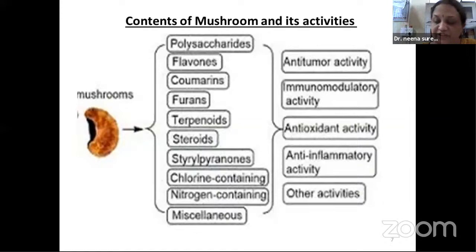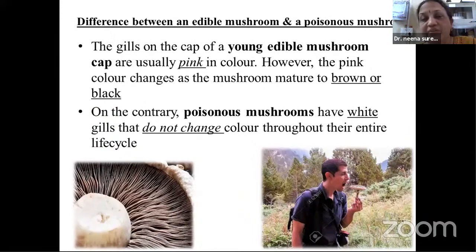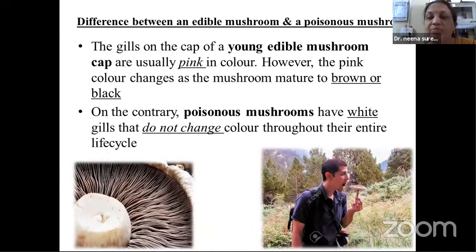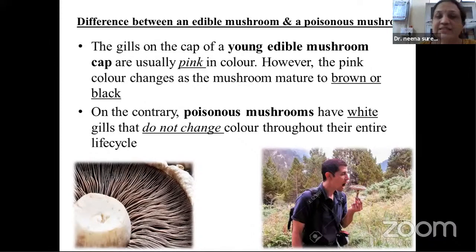Everyone often mistakes edible mushrooms for poisonous ones. When you look at the gills on the cap of a young edible mushroom, they are always pink in color, and when the color changes to brown or even black, it is considered edible. A poisonous mushroom always has white gills that do not change color throughout its life cycle. That is a major difference.